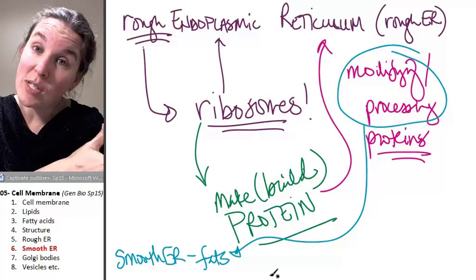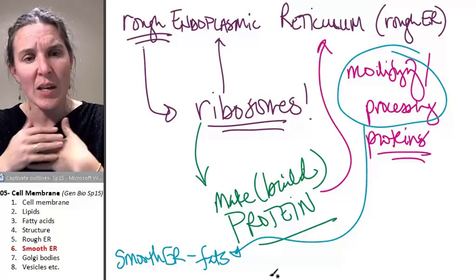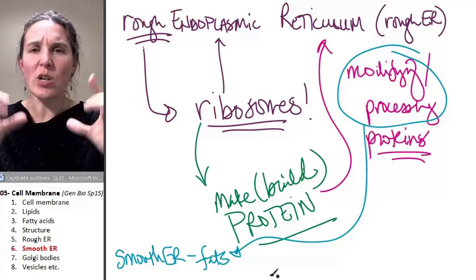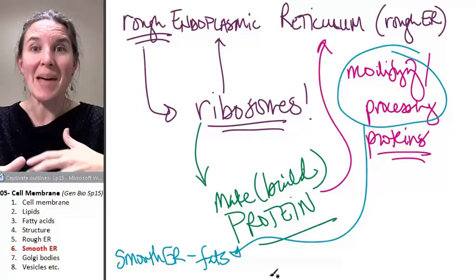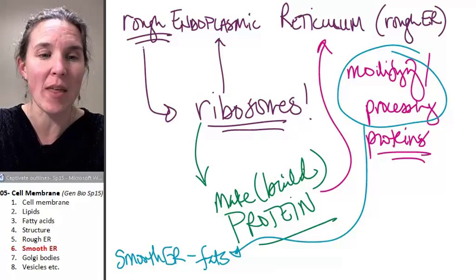We've processed proteins in the rough ER. We've processed fats in the smooth ER. The next structure is actually going to package these things. They've been processed, and now it's time to package them.